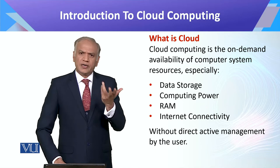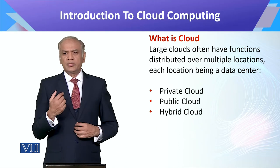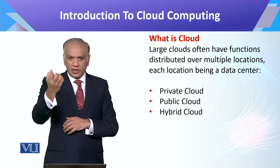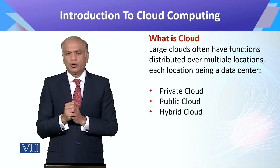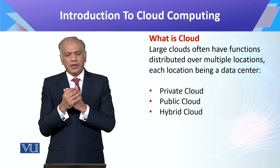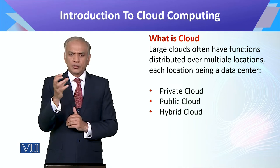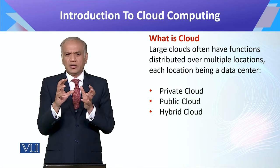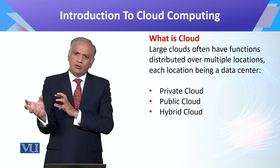Of course internet connectivity is required. There are two important things: uplink — through which you connect — and downlink — if you need to download data. Your packages should be according to your needs. There are multiple types of clouds: private cloud, public cloud, and hybrid cloud. Cloud features include on-demand usage — pay as you go — just like your mobile bill: you use as much as you top up.